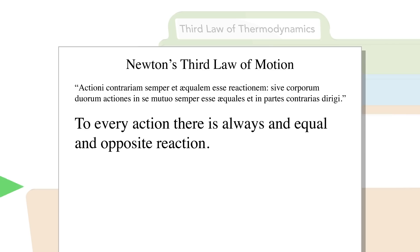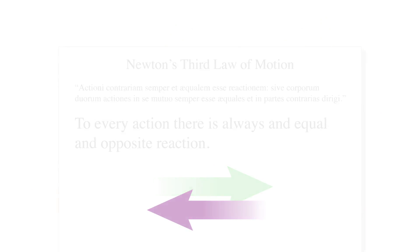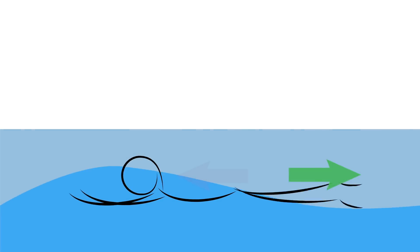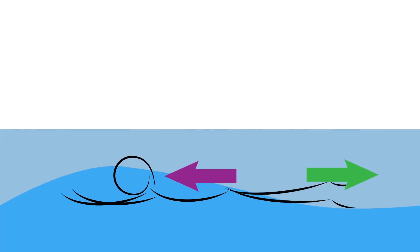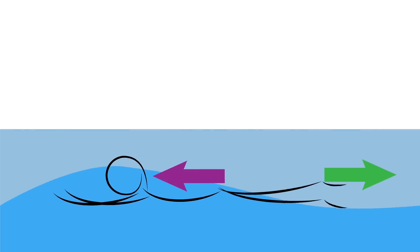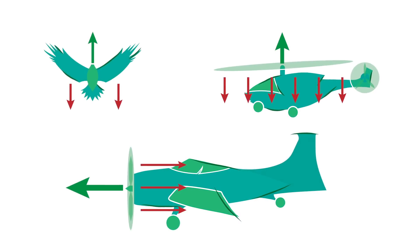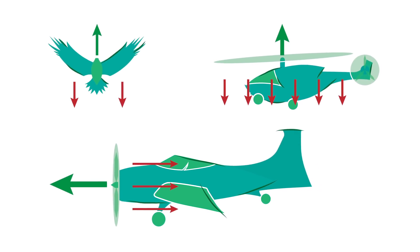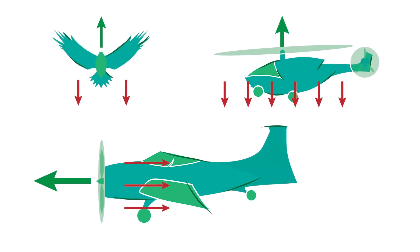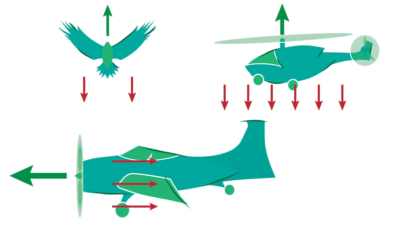This means when you exert a force on an object in one direction, that object exerts an equal force upon you in the opposite direction. Swimmers going through water exert a backward force on the water, and the water pushes them forward. Planes, helicopters, and birds exert force on the air, and the air pushes them up and in whatever direction they wish to travel.